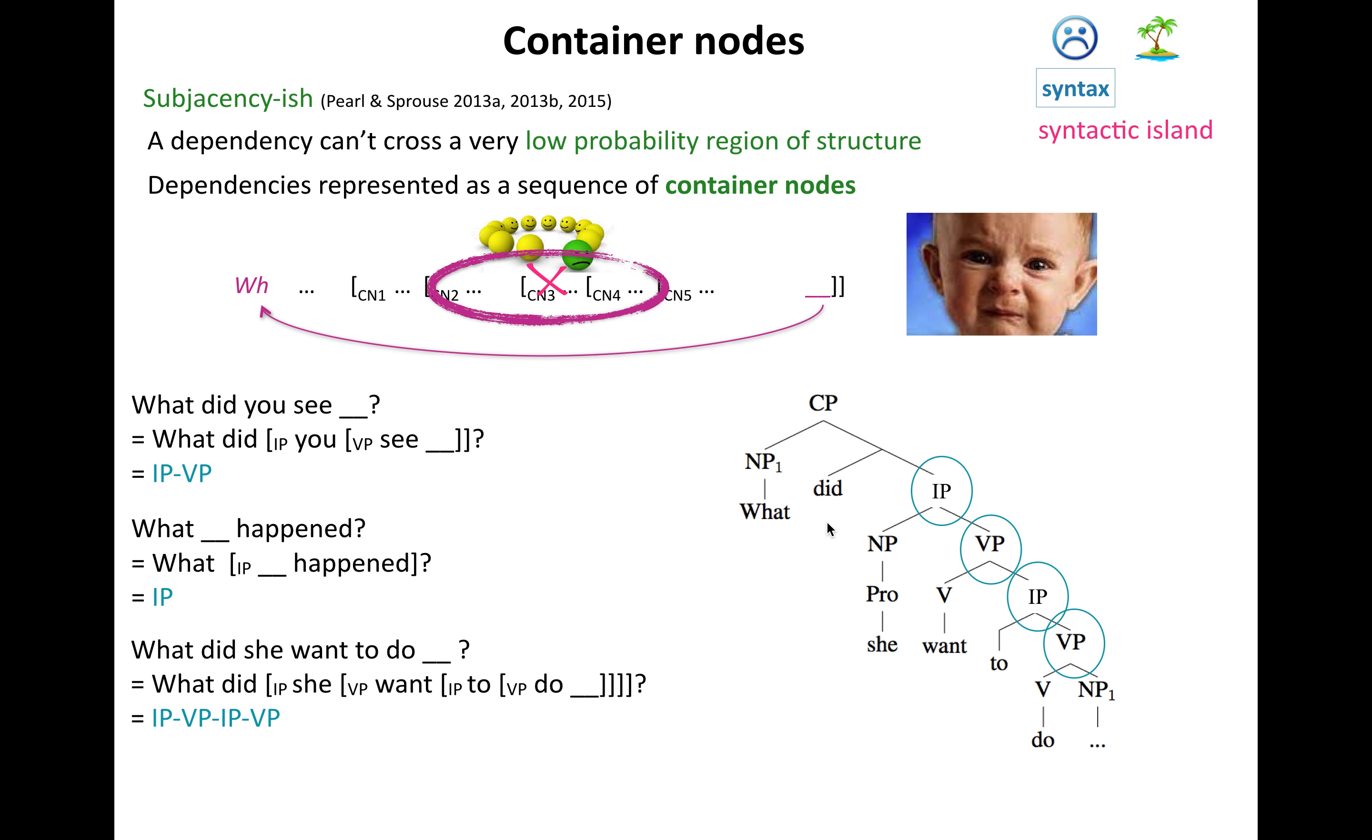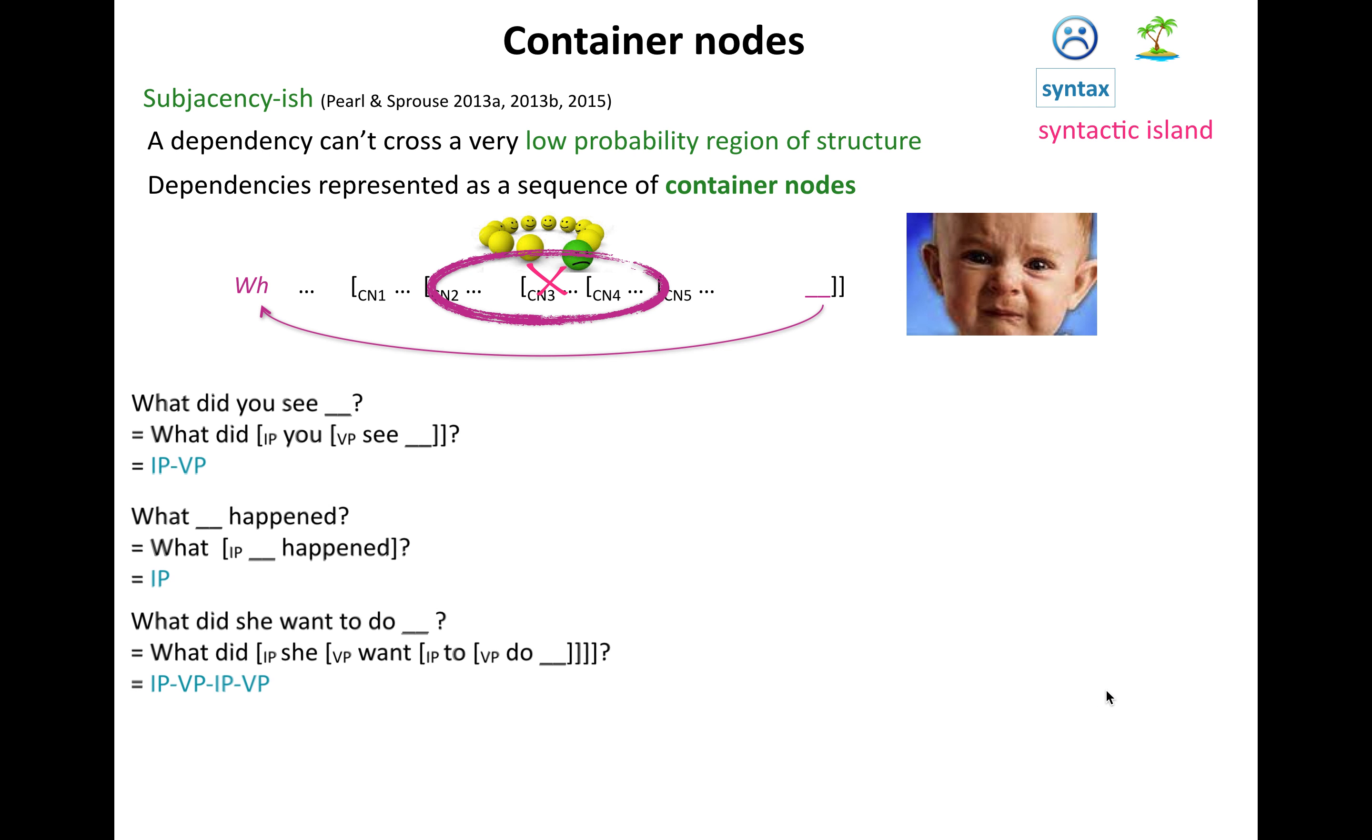Now we have this longer one. What did she want to do? Well, what is hooking up with the gap down here? You have to go through quite a number. You have to go through IP and then VP and then IP and then VP again until finally you get to your gap. And let's just do one more.